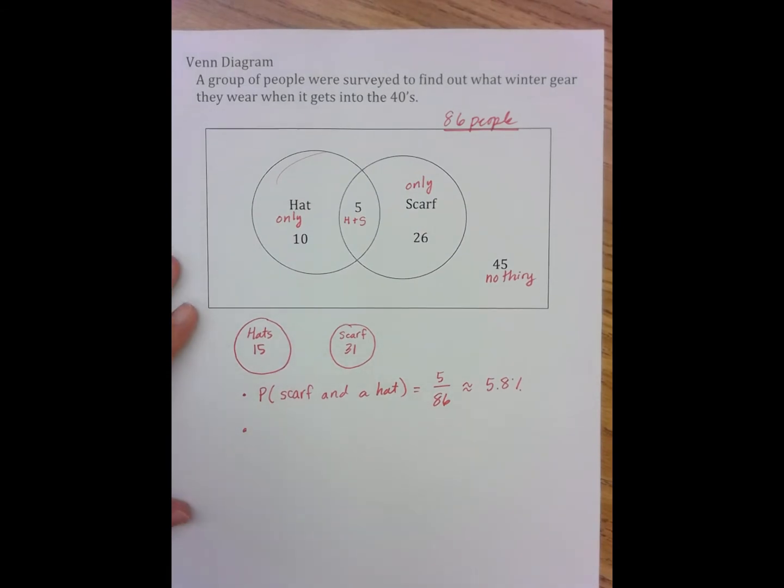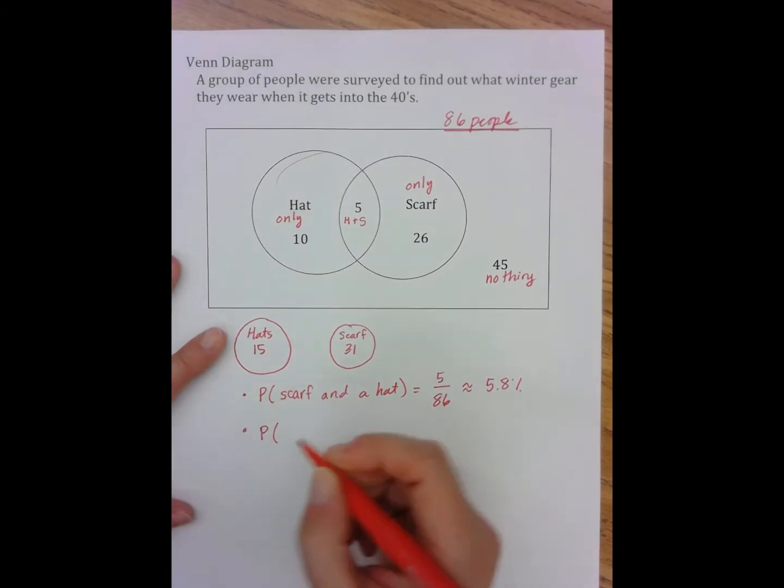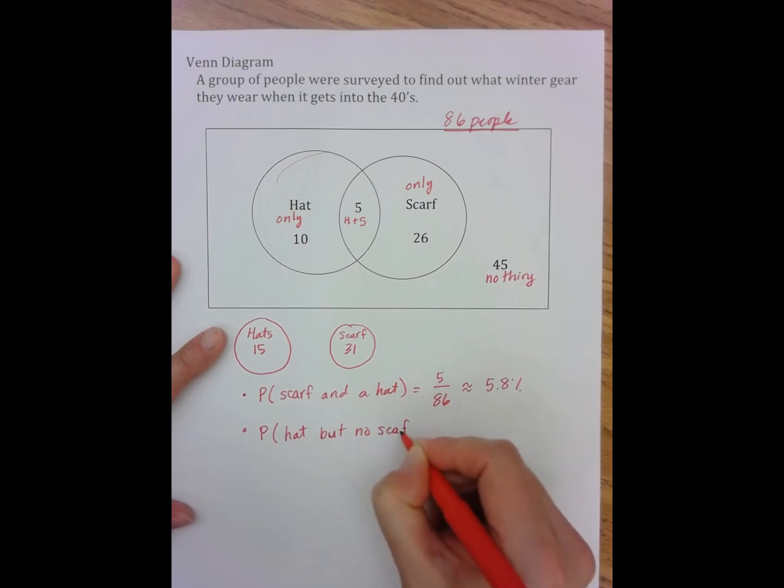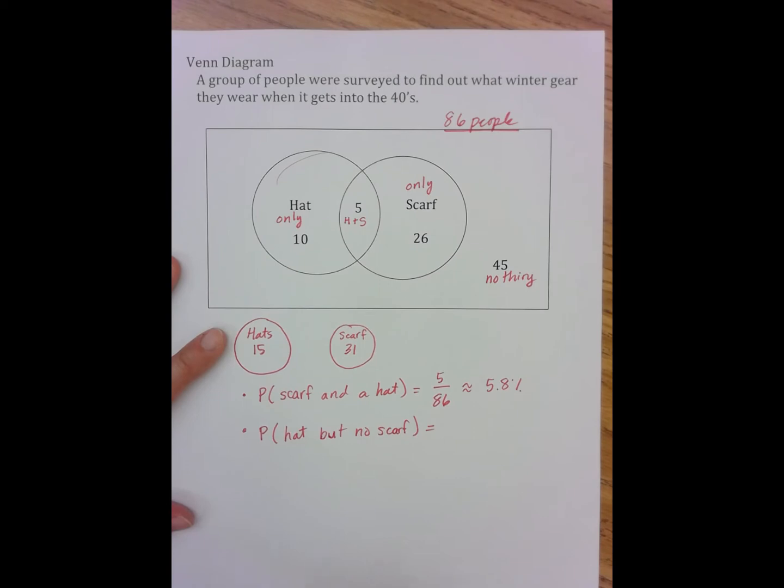Another probability is the probability that someone wears a hat but no scarf. So now I'm looking for the people who are only wearing a hat. So that's another way we could say this - we could say that this is only hat.